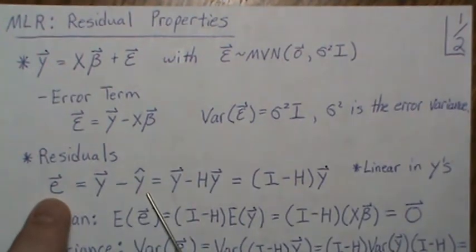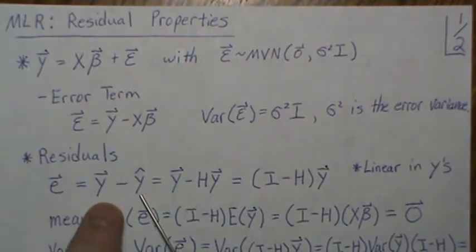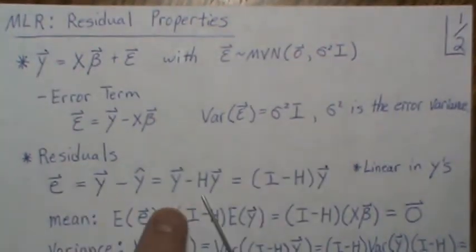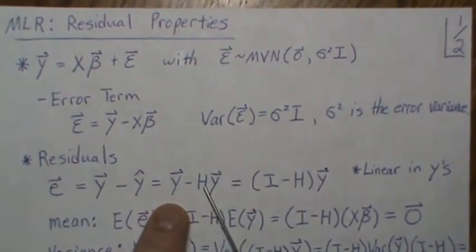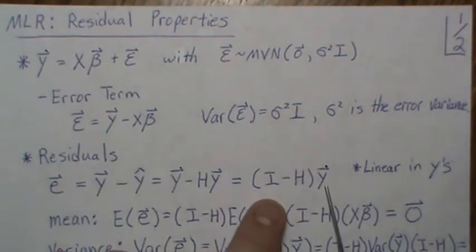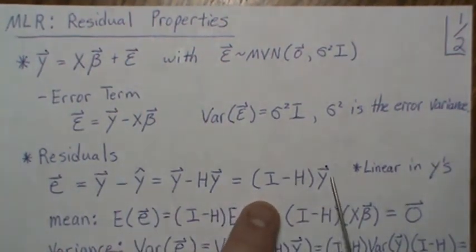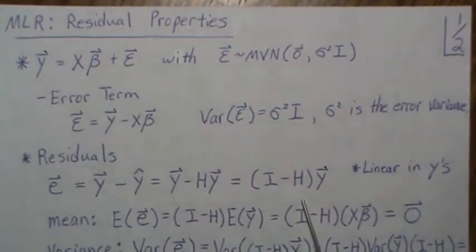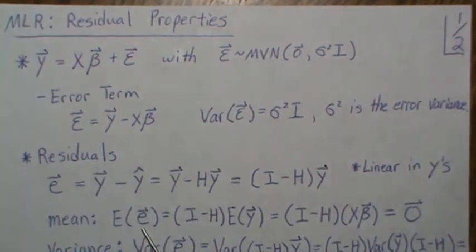So let's write the residuals in matrix form. The fitted model is H times y, where H is the hat matrix. Then we factor out y and we get I minus H. Note that it's linear in the y's, because that's going to play an important part in a second.